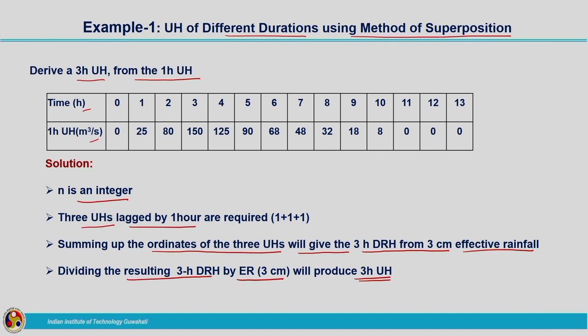First, we will lag the 1-hour unit hydrograph by 1 hour, then sum up the corresponding ordinates to form the direct runoff hydrograph of 3 hours produced due to 3 centimeters of rainfall. After that, we will divide each ordinate of the direct runoff hydrograph by 3 centimeters, which will produce the unit hydrograph of 3 hours.